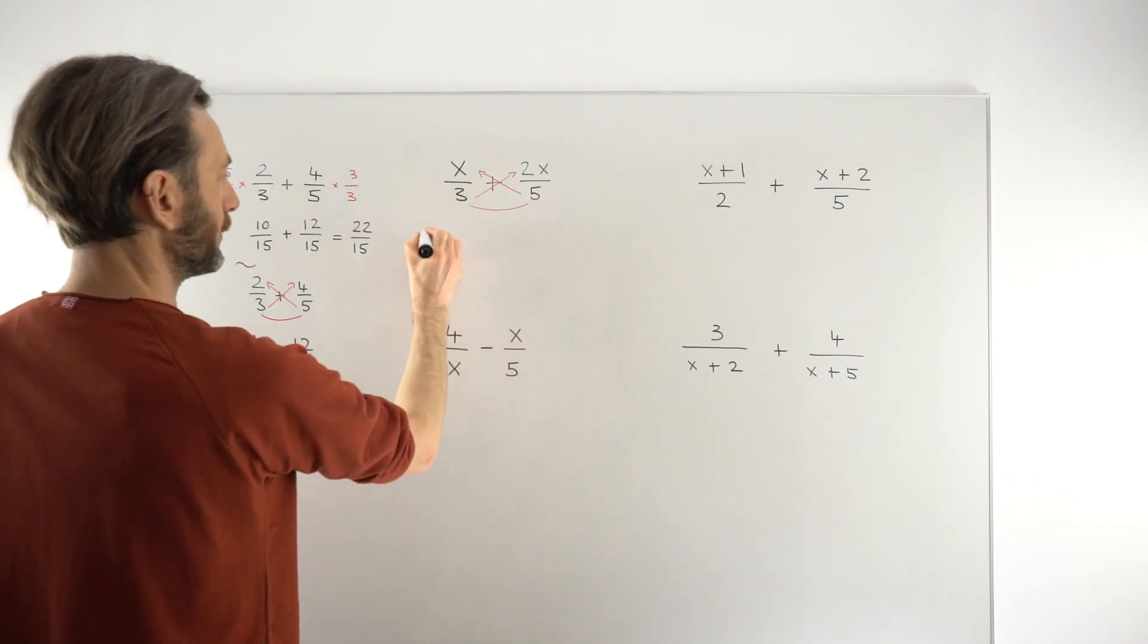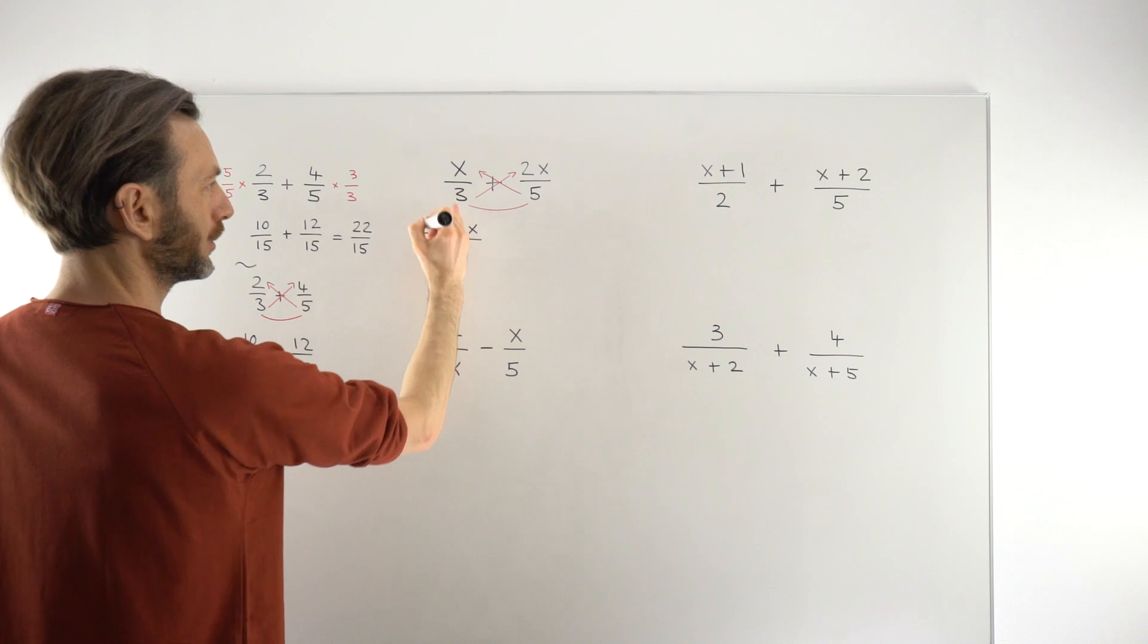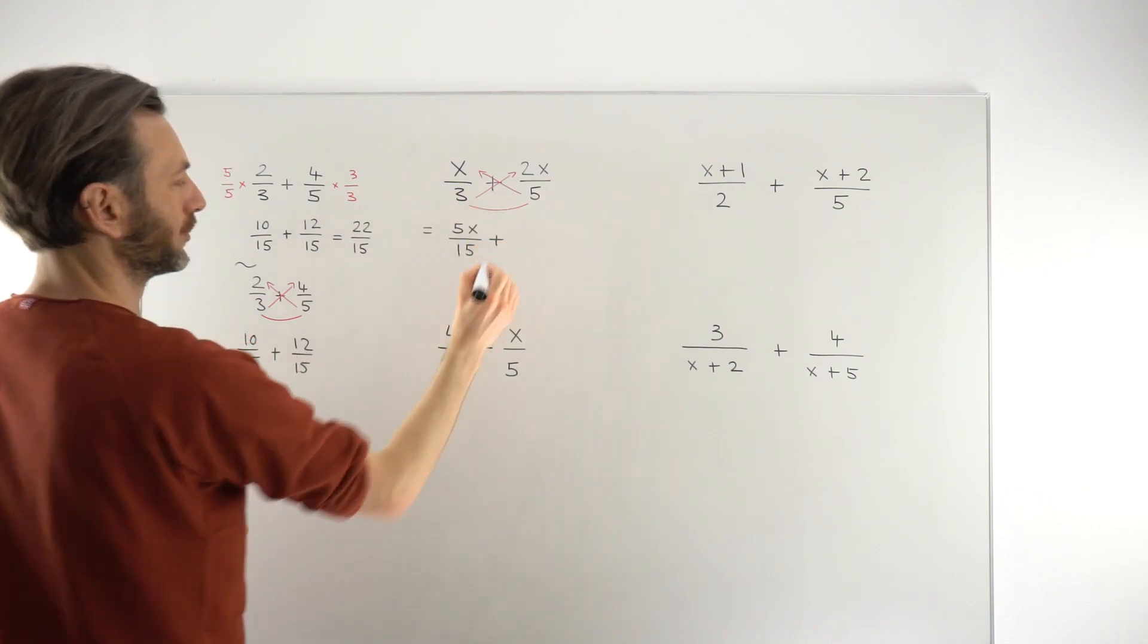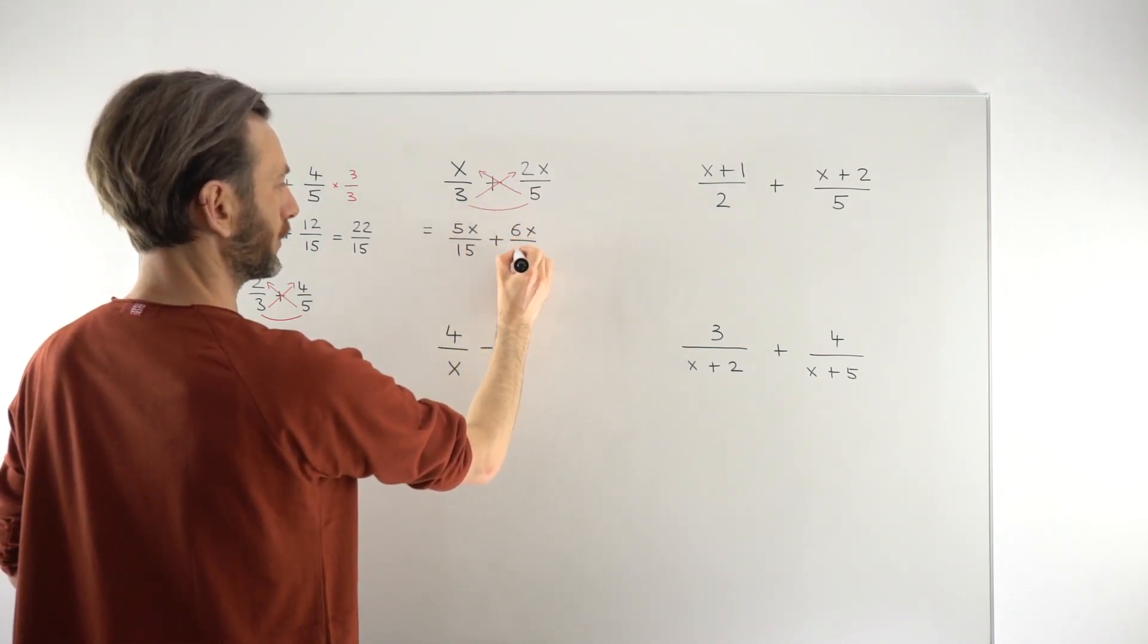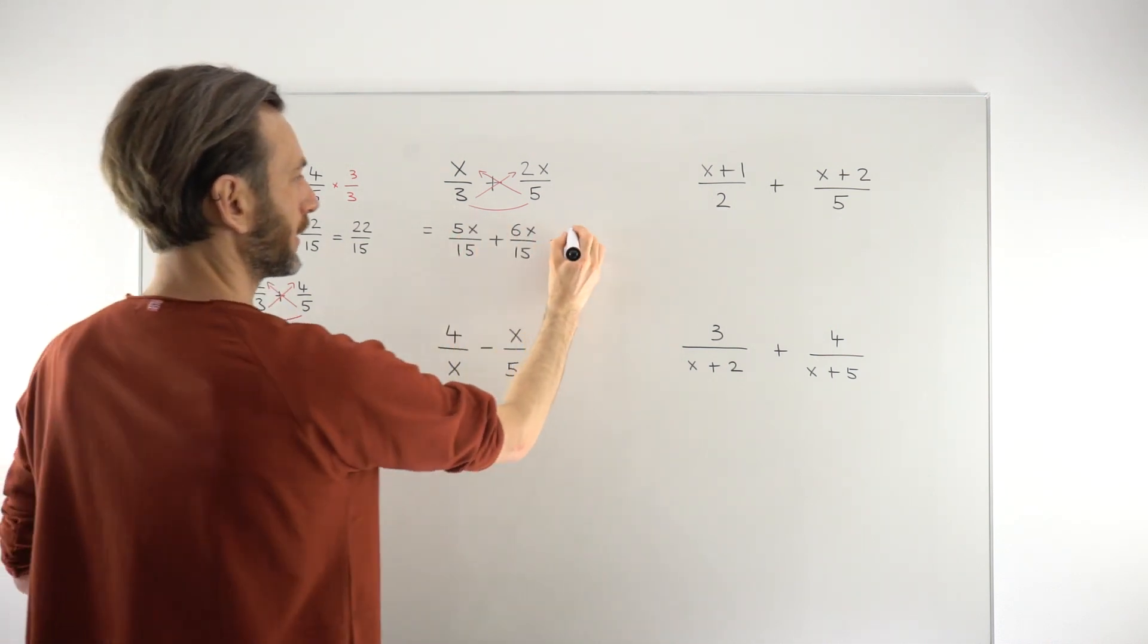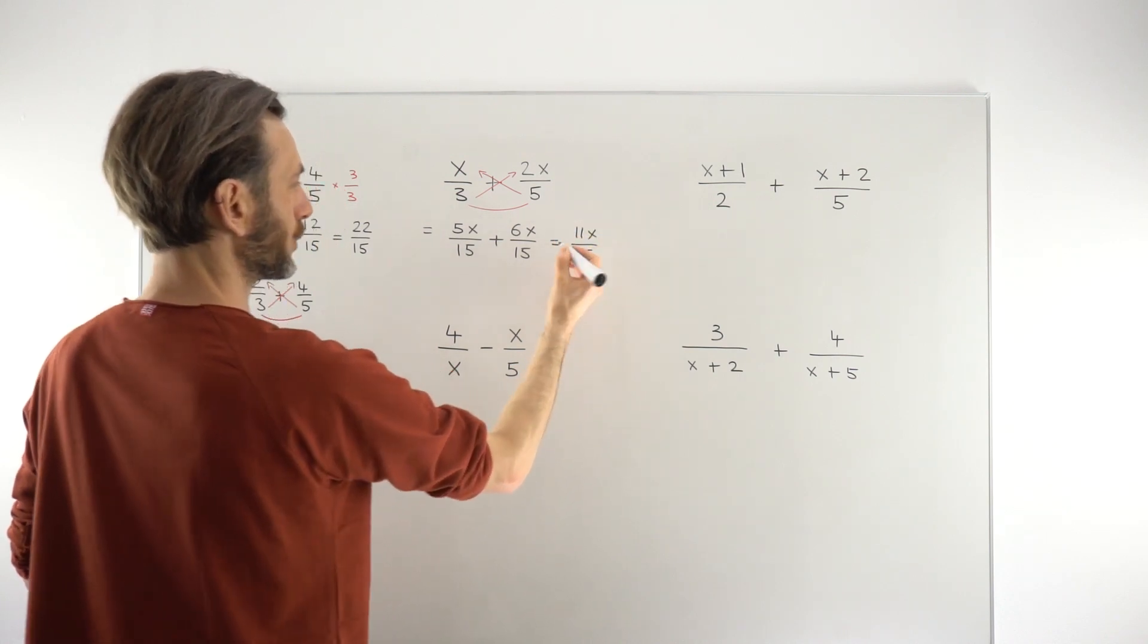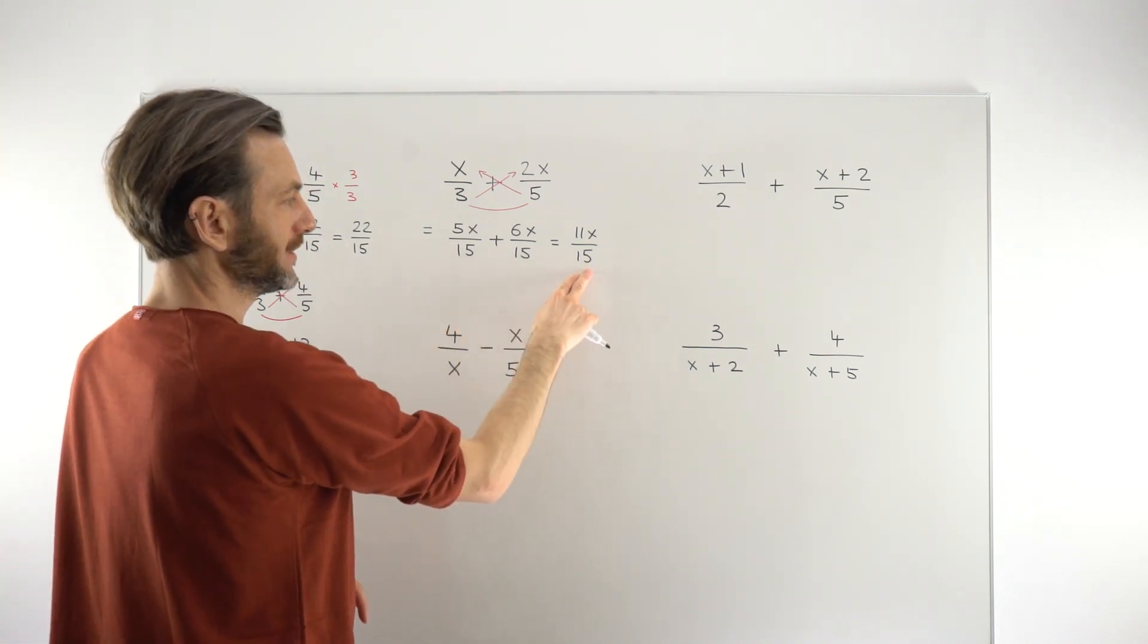So 5 times x gives you 5x for the top part of the first fraction. 5 times 3 gives you 15. So we're going to have a common denominator of 15 this time. 3 times 2x gives you a 6x on the top over 15. We've got a common denominator so we can just add them together. 5x plus 6x gives you 11x. And you just need one version of the 15 on the bottom.